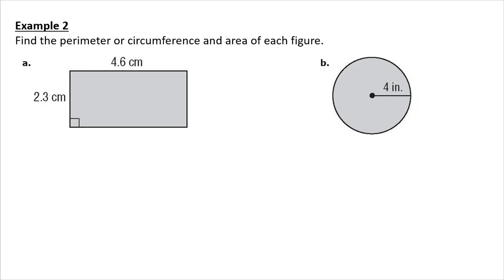Finding the perimeter and circumference of these. Perimeter of a rectangle. You have two sides that are equal. I have two sides that are 2.3 centimeters. I have two sides that are 4.6 centimeters. So, adding that all together, we get 13.8 centimeters. And remember, perimeter is a unit of length. How much, if I put a tape measure around it, how much is it going to be?